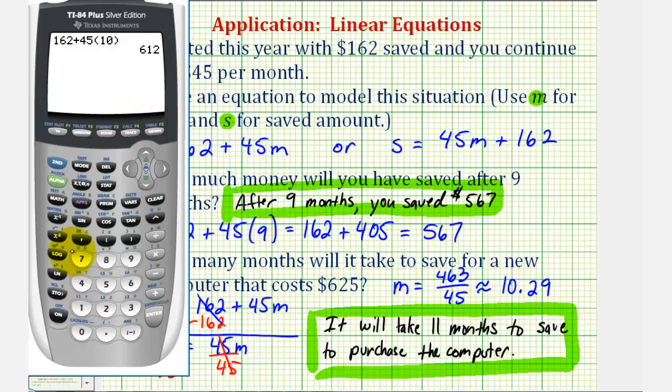we'd have 162 plus 45 times 11. Notice after 11 months, we do have enough money to purchase the computer that costs $625.